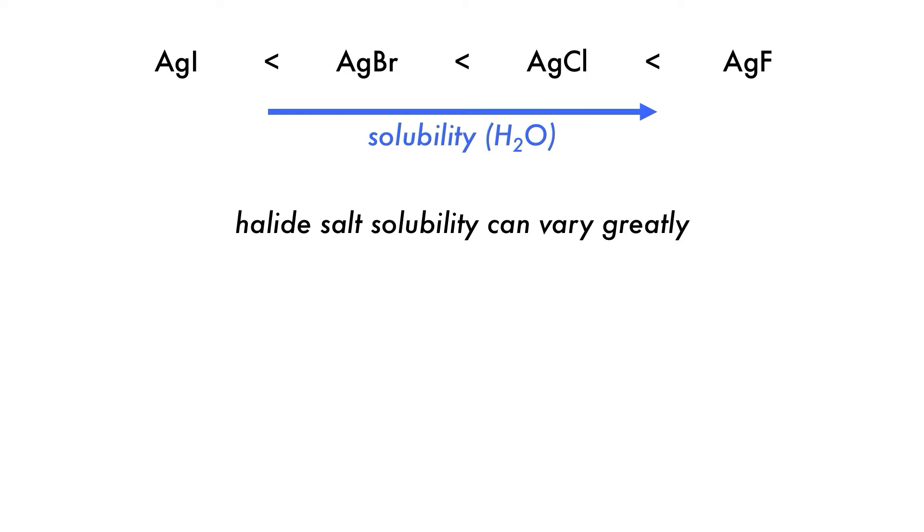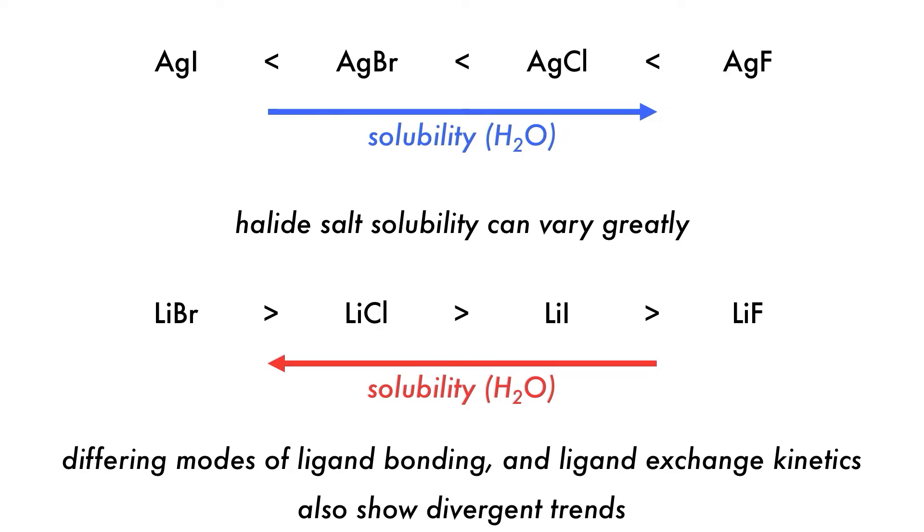Mercury halide salts also follow this trend, but lithium salts have the opposite trend, with lithium fluoride having very low water solubility. Other diverging trends are different modes of ligand bonding and exchange kinetics. How do we account for these diverging trends?